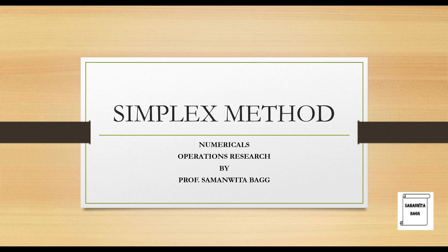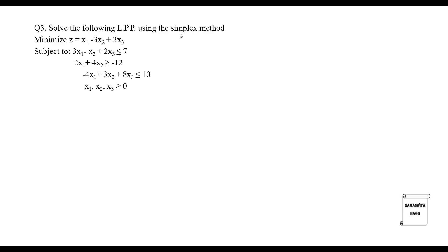Hello everyone, welcome to the next session on operations research. In this session we will solve the third and last numerical on the simplex method. The problem is of minimization type: z equals x1 minus 3x2 plus 3x3, subject to three constraints with three variables. x1, x2, x3 are greater than or equal to 0 as the non-negativity constraint.